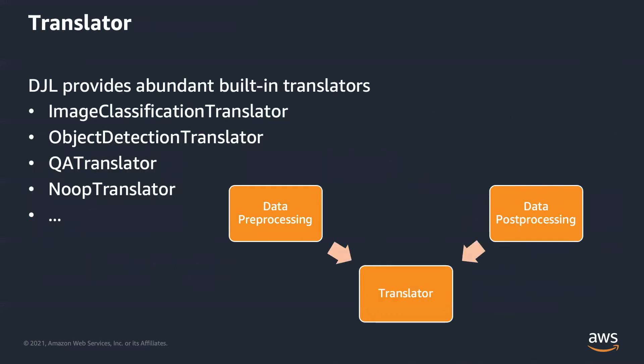Given the flexibilities of data pre-processing and post-processing, sometimes the code becomes messy. So DJL designs a new class called translators to organize them. We offer a bunch of widely used translators based on different types of applications, like image classification translator, object detection translator, question answering translators, or text-to-text translator. We are still implementing more.